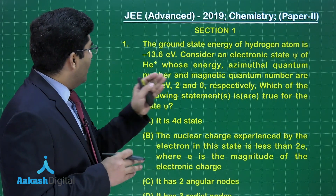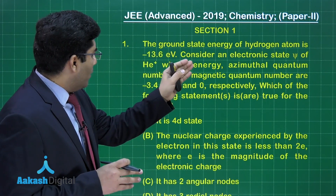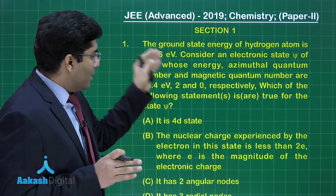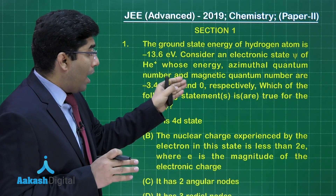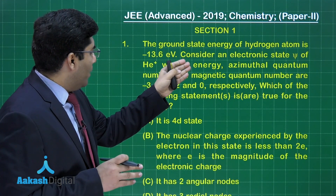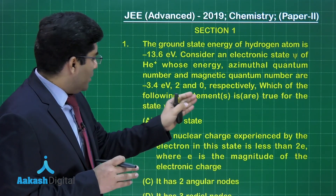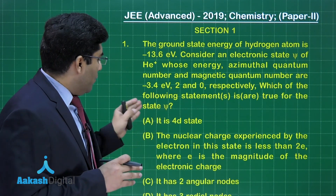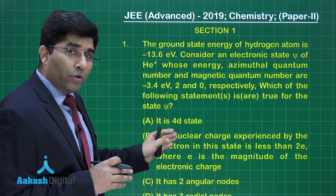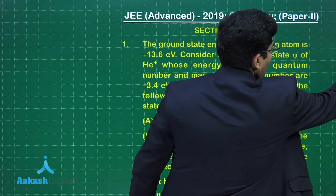In this question, it is given that the ground state energy of the hydrogen atom is minus 13.6 eV. Consider an electronic state xi of He+ whose energy, azimuthal quantum number, and magnetic quantum number are minus 3.4 electron volt, 2, and 0 respectively. Which of the following statements are true for state xi? The options are: (A) it is a 4d state, (B) the nuclear charge experienced by the electron is less than 2e, (C) it has two angular nodes, and (D) it has three radial nodes.